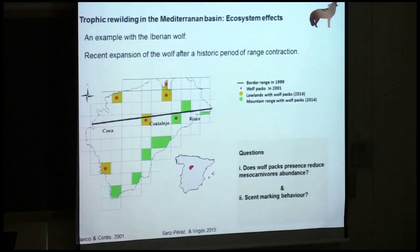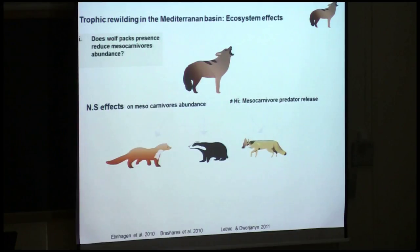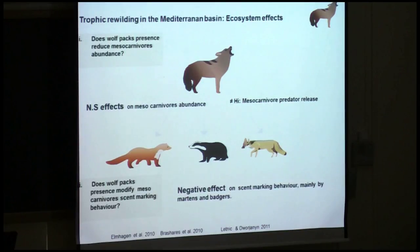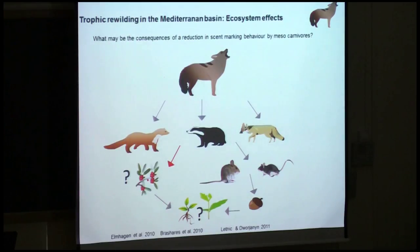Going directly to results: we did not find any significant effect on mesocarnivore abundance, suggesting we were not in a previous mesopredator release context. However, we did find a negative effect on scent-marking behavior, mainly in martens and badgers. Returning to our hypothetical expectations, despite no effect on abundance, a modification of scent-marking behavior may lead to a modification of the dispersal pattern of seed species dispersed by meso-carnivores. This certainly deserves further attention and should be studied.